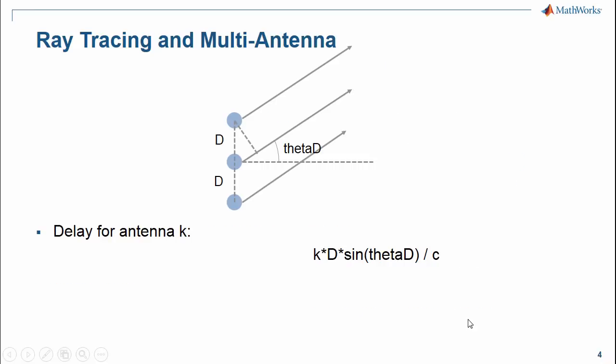Both the transmitter and the receiver use an antenna array, and we can vary the number of antennas.